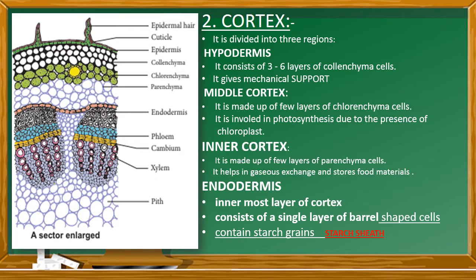The second region is the middle cortex. It is made up of a few layers of collenchyma cells and involves in photosynthesis due to the presence of chloroplasts. Chloroplasts are parenchyma cells which contain photosynthetic pigments called chlorophyll. So middle cortex is made up of a few layers of chlorenchyma cells involved in photosynthesis.